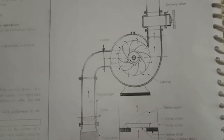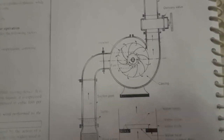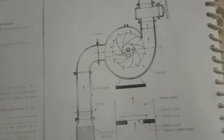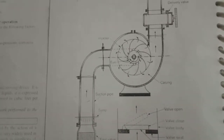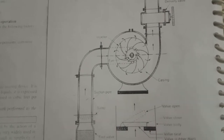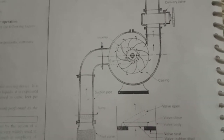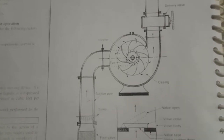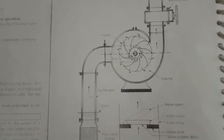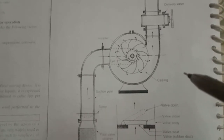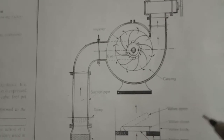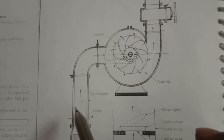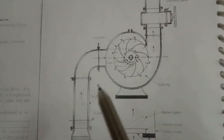Generally, centrifugal pumps move liquid to some level and discharge it. In centrifugal pumps, flow rate and pressure build up. There are two main sections: one is the suction side and another one is the discharge side.